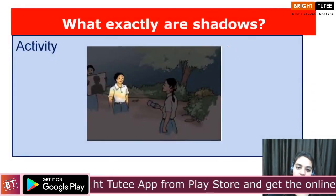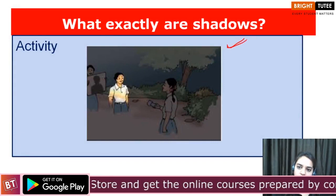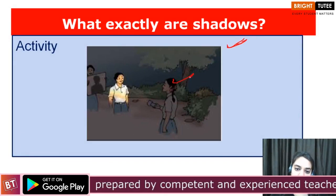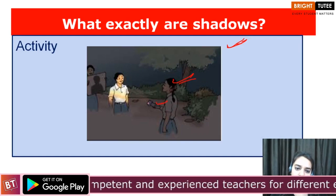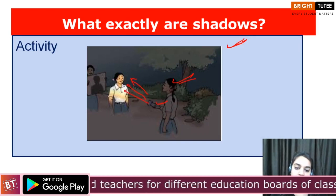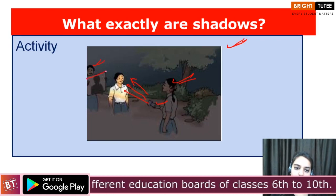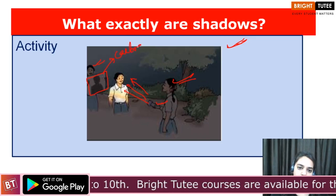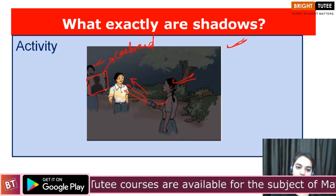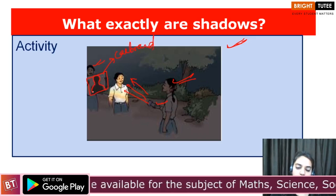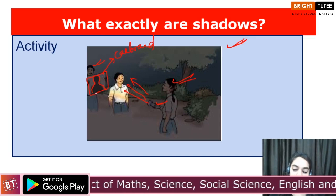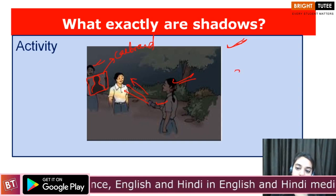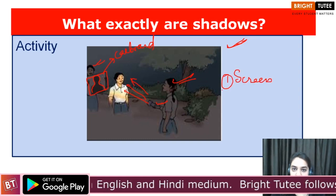This image shows you this activity in a better way. You can see holding a torch, lighting it towards your friend's face, and another friend is holding a screen — just a piece of cardboard sheet. You can observe the shadow being formed on this cardboard. From these activities we can conclude that we need a screen to obtain a shadow.